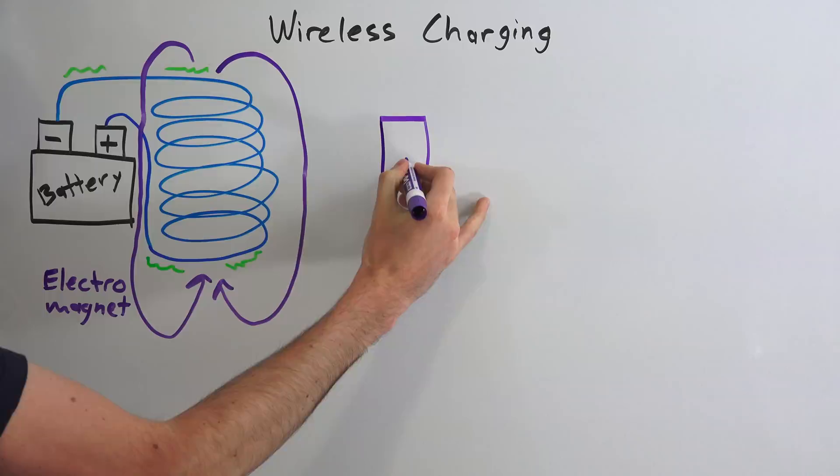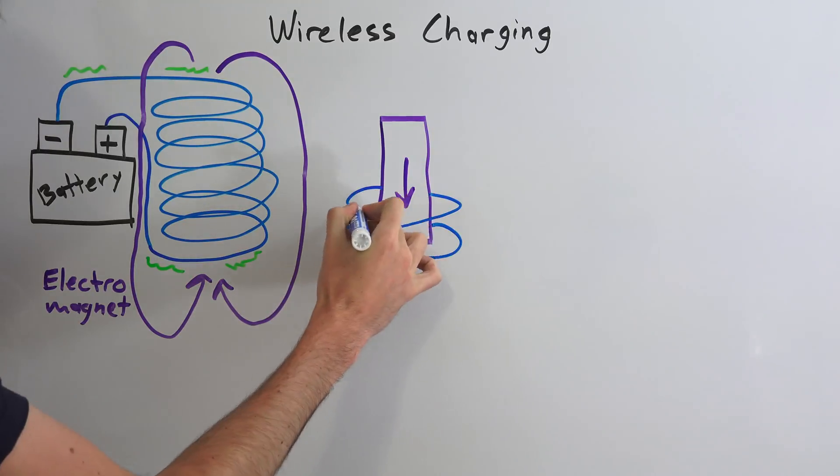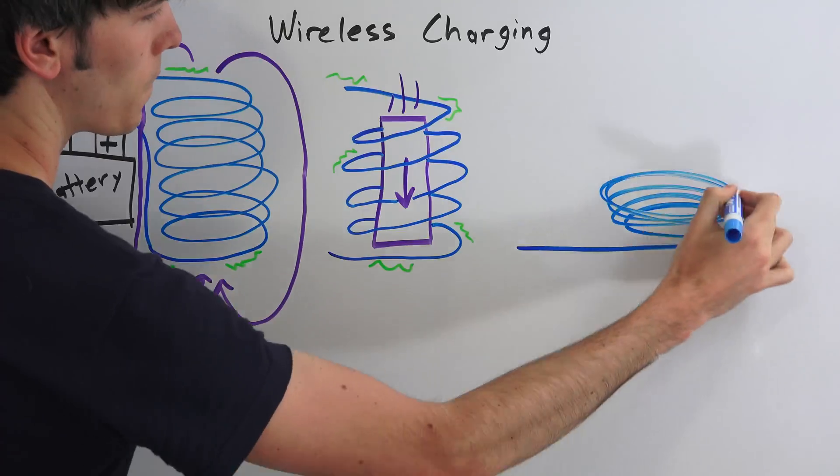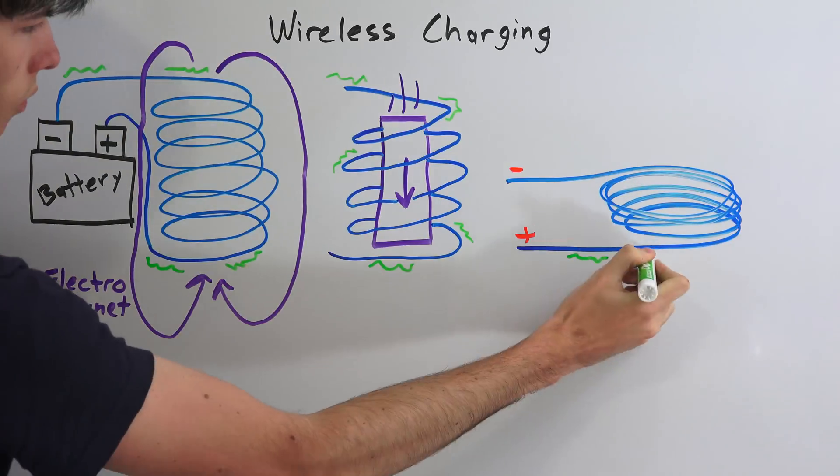The opposite is true as well. If you pass a magnet through a wire coil, this will induce a current within the wires. Wireless charging works by taking advantage of these two facts.